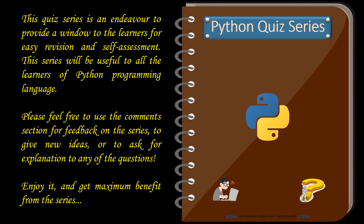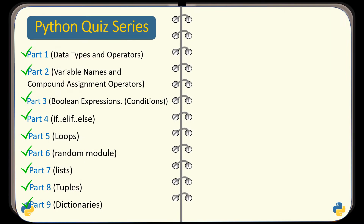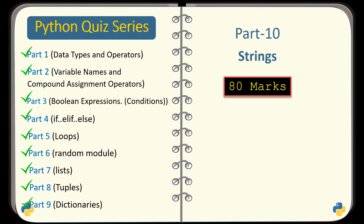Hello friends, welcome back to the Python quiz series. 9 parts of this series have already been published. You can find their links in the description box below. This is the 10th part covering strings with questions worth 80 marks.